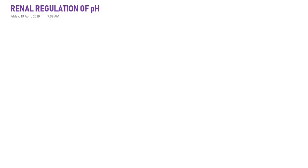Hello everyone, welcome back. Today we are going to learn about the renal mechanism of acid-base balance, that is renal regulation of pH. We know there are three defense mechanisms in acid-base balance or regulation of pH. The first line defense mechanism is the buffer mechanism, the second is respiratory regulation, and this renal regulation of pH is the third line or tertiary defense mechanism.